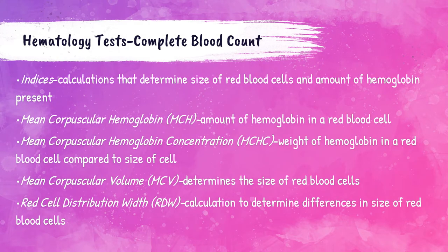The CBC also includes indices — calculations that determine things about the red blood cells. These include: MCH (mean corpuscular hemoglobin), which determines the amount of hemoglobin within the red blood cell; MCHC (mean corpuscular hemoglobin concentration), which determines the weight of hemoglobin in the red blood cell; MCV (mean corpuscular volume), which determines the size of the red blood cells; and RDW (red cell distribution width), which determines the differences in size of red blood cells.